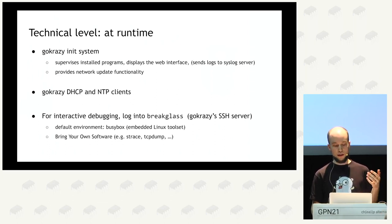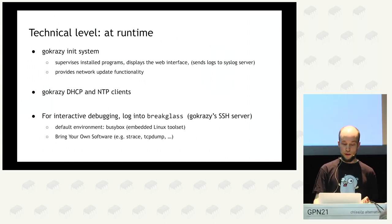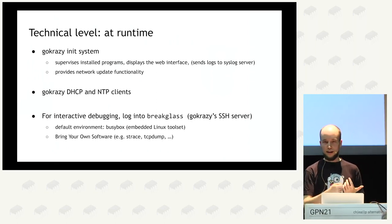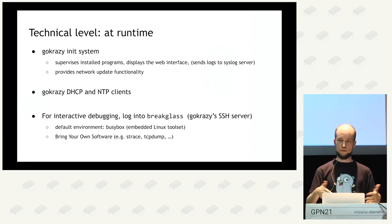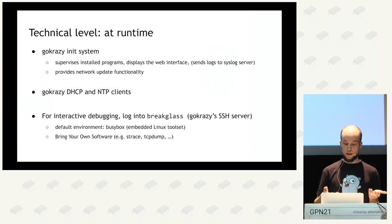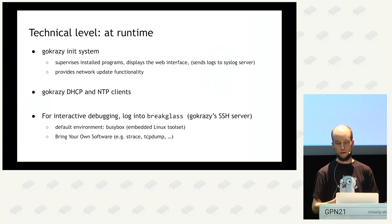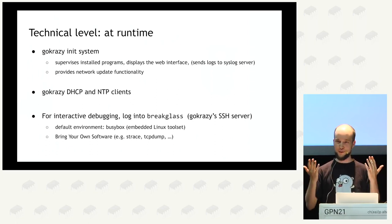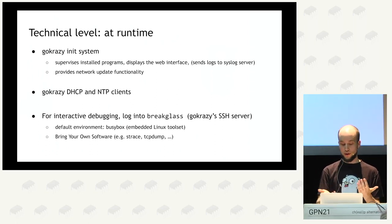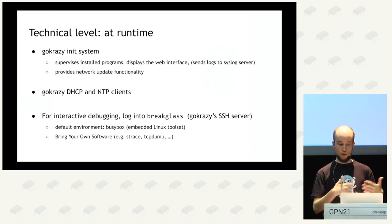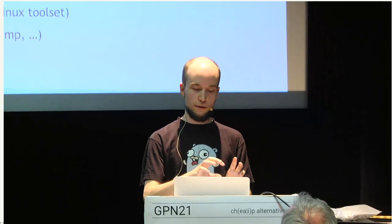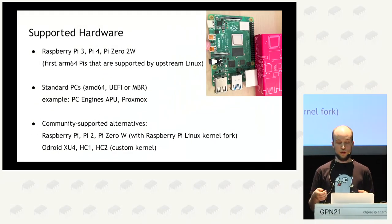Another component added by default for development is called 'break glass.' It's an SSH server for interactive debugging. The name reflects breaking the appliance model — normally there's no C code running, but break glass starts an SSH server and provides a BusyBox statically compiled environment. The key idea is you bring your own software: if you want to debug syscalls you copy over strace; for network debugging you copy over tcpdump. This keeps the system small and self-contained by default while still enabling powerful development tools.